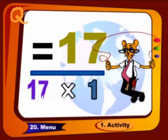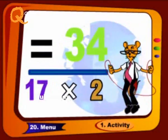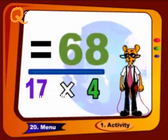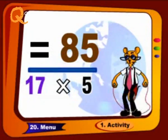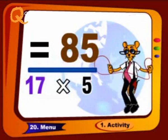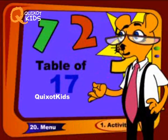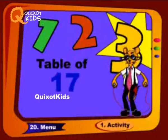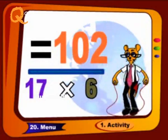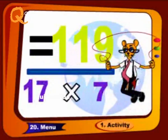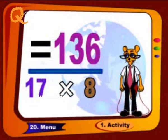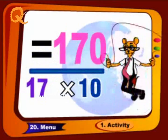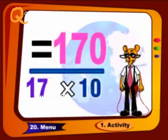Seventeen 1s are 17, seventeen 2s are 34, seventeen 3s are 51, seventeen 4s are 68, seventeen 5s are 85. Let us go further. Seventeen 6s are 102, seventeen 7s are 119, seventeen 8s are 136, seventeen 9s are 153, seventeen 10s are 170.